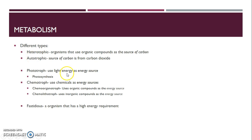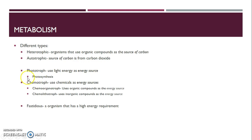Plants are autotrophic because they fix carbon dioxide into sugars using photosynthesis. But photosynthesis is with regard to energy. If you use light energy as your source of energy, like you do in photosynthesis, then you are a phototroph.